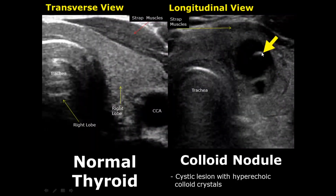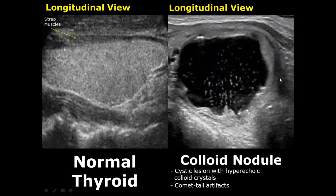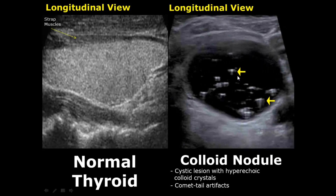A colloid nodule will have a cystic lesion filled with echogenic colloid crystals. Here you can see one crystal in this image — it is hyperechoic. Here is another image of a colloid nodule having multiple colloid crystals that are hyperechoic. They can also have comet tail artifacts, which you can see more clearly in this image. Usually these types of cystic appearances or appearances with internal septations are benign.